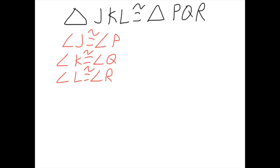We can do the same thing with the sides as well — it's just a little bit different. J and K are right next to each other, and P and Q are right next to each other. That means side JK is congruent to side PQ.